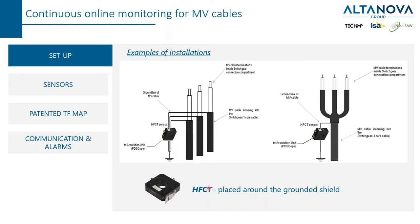The most used sensor is called HFCT and it is placed around the grounded shield. In case of a cable with three separated wires, we place the sensor around the three wires; if we have a cable with a single shield, we can place the sensor on it. It's important to highlight that Falcon tells you if there is a defect in the cable — it can identify which cable — but it does not tell you which phase.